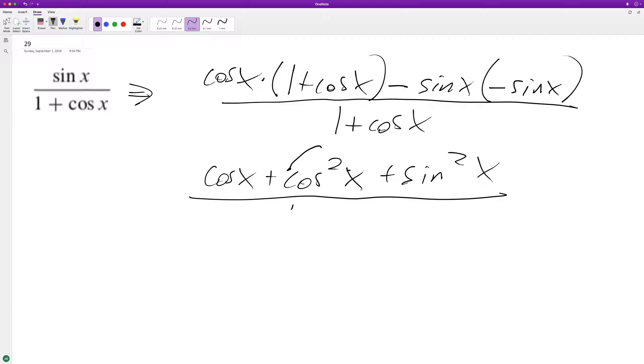And I got the denominator here, one plus cosine x. This right here is a trig property, it's equal to one. So we end up with cosine x plus one. Wait, something's not right.